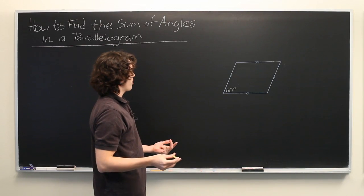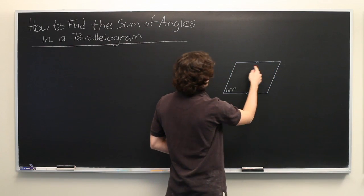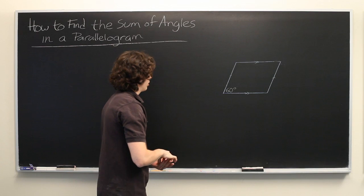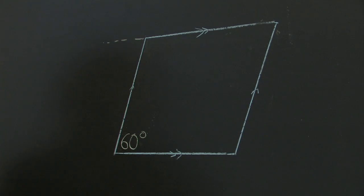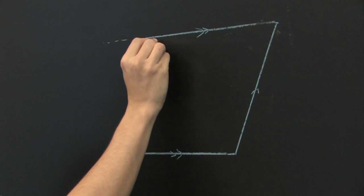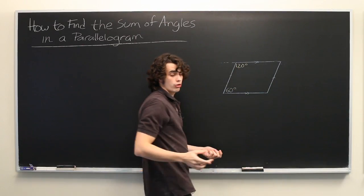You might start off by saying, okay, these two lines are parallel, and thus we can think of this as a transversal. Some simple geometry tells us that this interior angle must be 120 degrees, since these two angles must add up to 180.